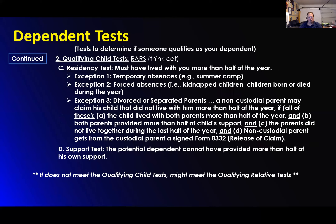Now let's talk about the residency — this one's really important. The qualifying person must have lived with you more than half of the year. There are temporary absences — for example, they go to summer camp, that does not qualify as taking them away from you. A visitation with their grandmother does not qualify as being taken away from you. If a child is born or died during the year, that does not qualify as an absence. If the child is kidnapped, that is not considered an absence.